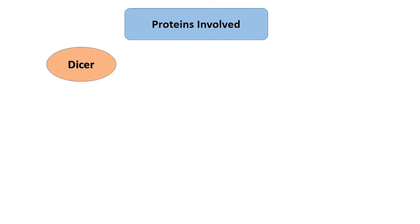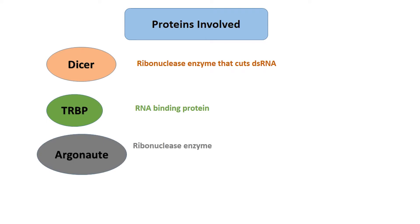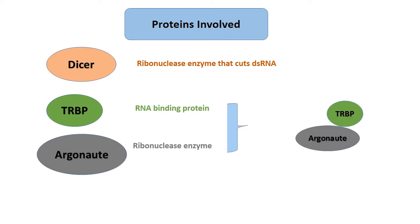Dicer, a ribonuclease enzyme that can cut double-stranded RNA molecules. Trbp, a protein that helps in binding RNA molecules. Argonaute, also a ribonuclease that degrades RNA molecules. Trbp and Argonaute together form a protein complex called the RNA-induced silencing complex, abbreviated as RISC. Dicer provides the initial substrate to activate RISC.